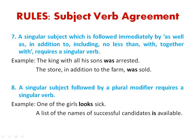Rule 8: a singular subject followed by a plural modifier again requires a singular verb. For example, 'one of the girls looks sick.' Also, 'a list of names of successful candidates is available.' Here, 'list' is the singular subject followed by the plural modifier 'names,' but since the subject is singular, the verb takes the singular form 'is,' not 'are.'